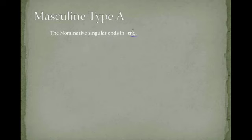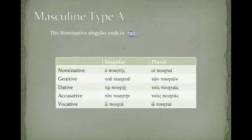That is, this will correspond roughly to our type A feminines. There's the eta instead of alpha. So, let's take a look at these.